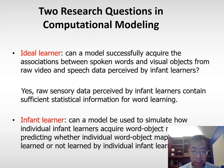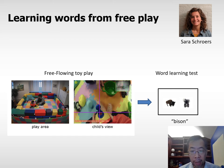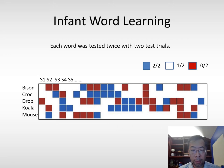For the second question — can the model predict which words are learned by individual infants — we first needed to know how much infants learn from free-flowing interaction. We ran an experiment adding a word learning test at the end of free play, presenting two pictures on screen and measuring infant looking behavior after hearing the target word. This study was run by Sarah Schuers. We tested each word twice, yielding three possible outcomes: learning on both trials, learning on one of two, or failing to show learning on either trial.